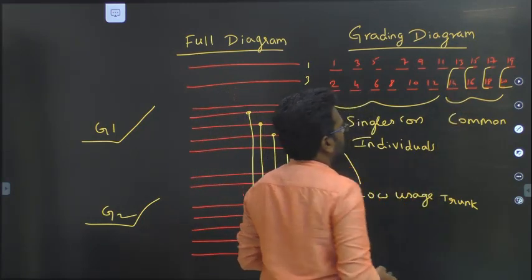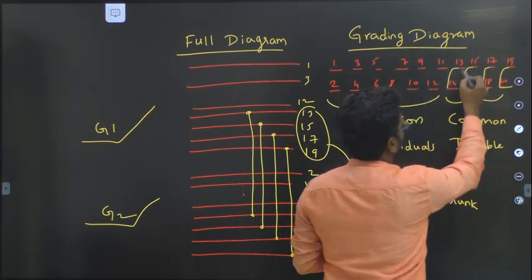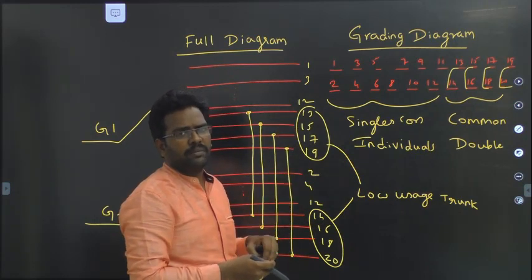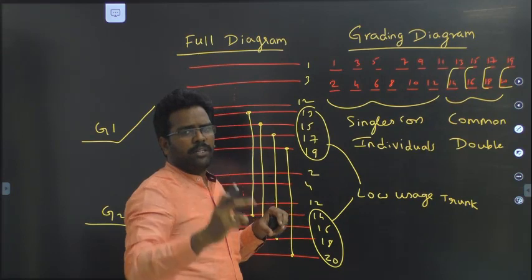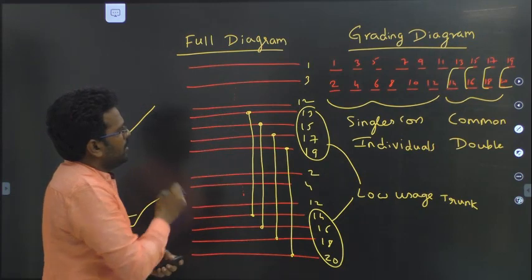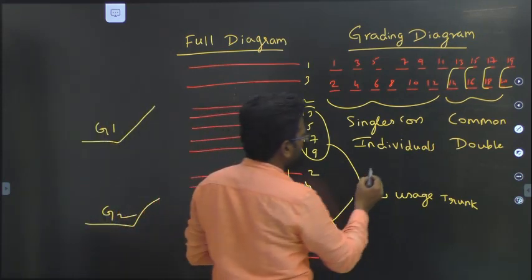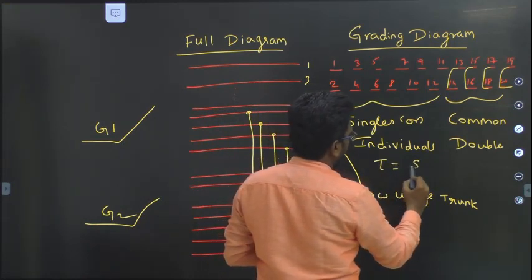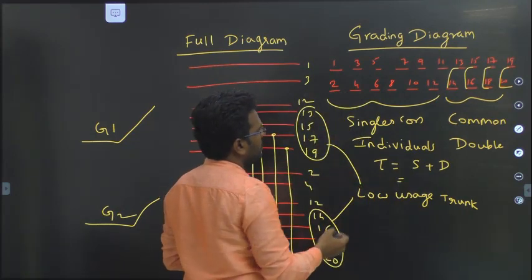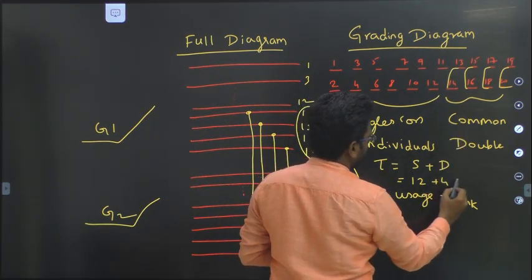Here we use one more terminology: doubles. Doubles means 2 trunks made common. If we are making 4 trunks common, it is called quadruples. So: singles, doubles, quadruples — based upon the number of groups. Total number of trunks equals singles plus doubles: 12 singles plus 4 doubles equals 16 trunks, for the same availability of 10.